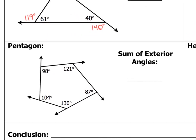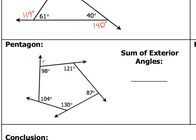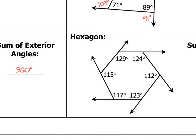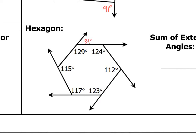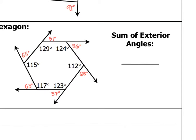Let's do that for a pentagon now. My exterior angles would be 82 degrees, 59 degrees, 93 degrees, 50 degrees, and 76 degrees. If I add all of those up, I get 360 degrees. Finally, for a hexagon, I have 51 degrees, 56 degrees, 68 degrees, 57 degrees, 63 degrees, and 65 degrees. Add all of those exterior angles together, and we get 360 degrees.